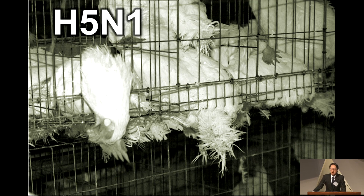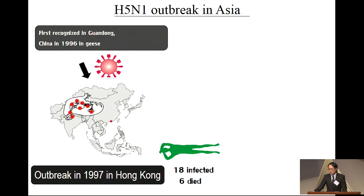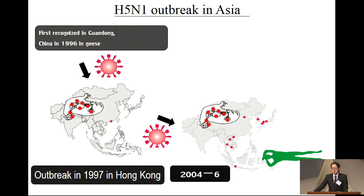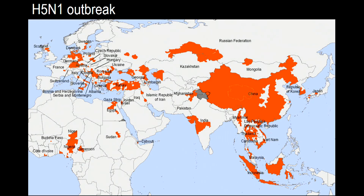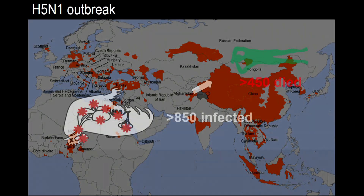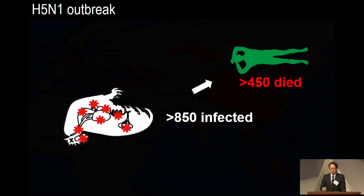There are viruses out there that we need to watch, and one of them is H5N1 avian influenza virus, the so-called bird flu. This virus was first identified in southern China in 1996 and caused an outbreak in Hong Kong in 1997, infecting 18 people — of those, six died. Since 2007, this virus spread to Asian countries, and in 2005, there was a major outbreak in Qinghai Lake in wild waterfowl. Wild waterfowl then took this virus to Europe and Africa. Thus far, more than 800 people are known to have been infected, and of those, over 450 died.